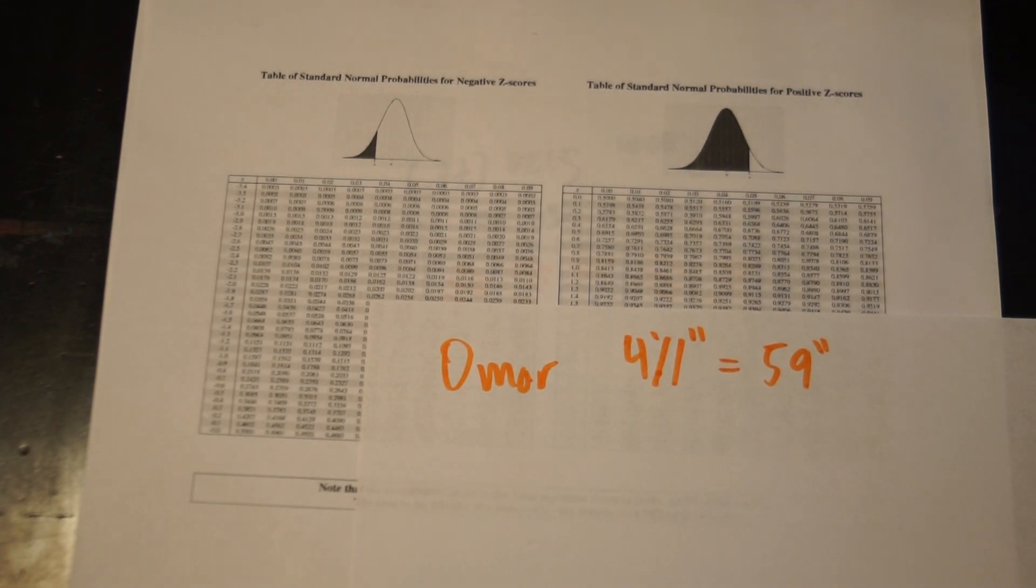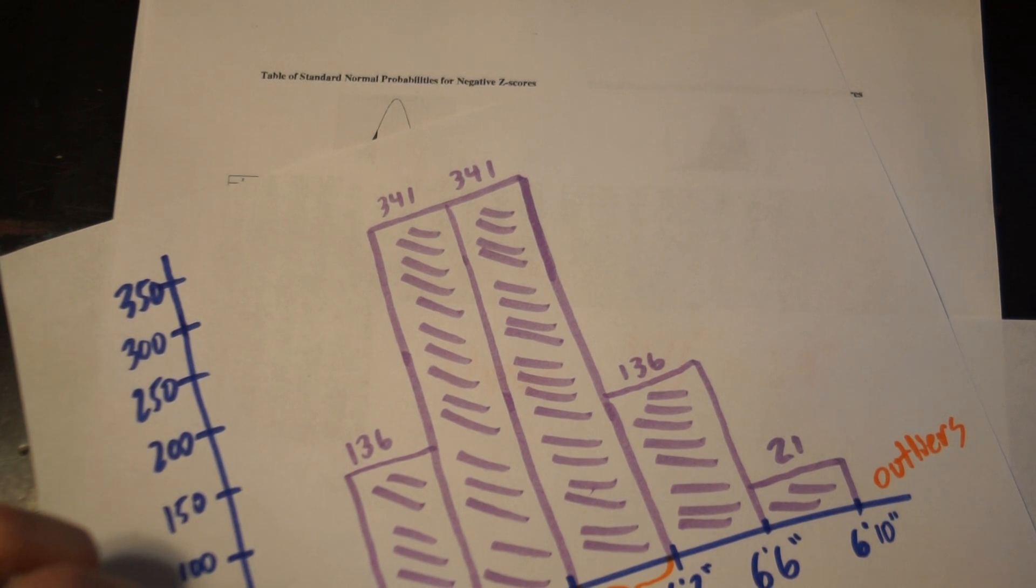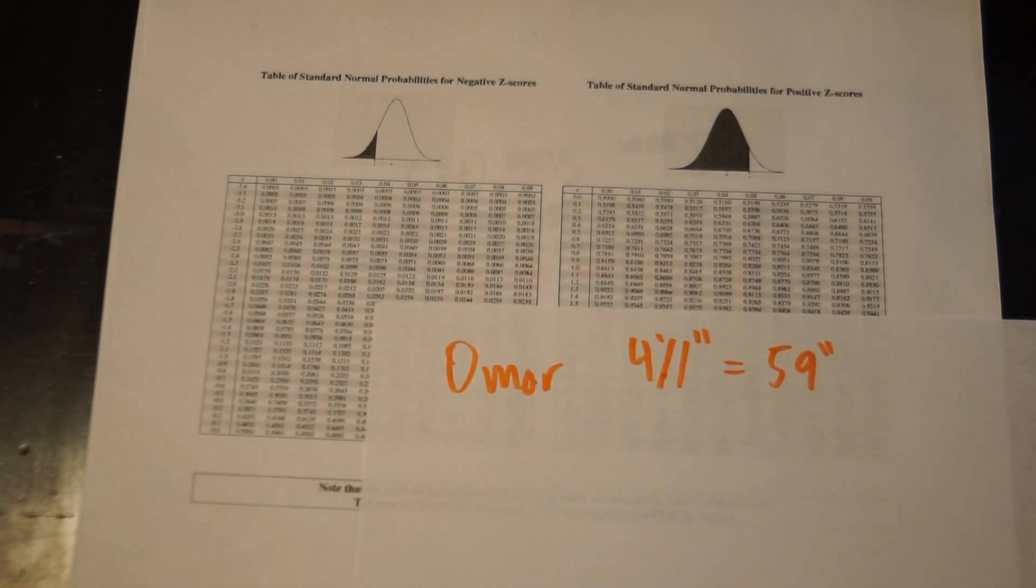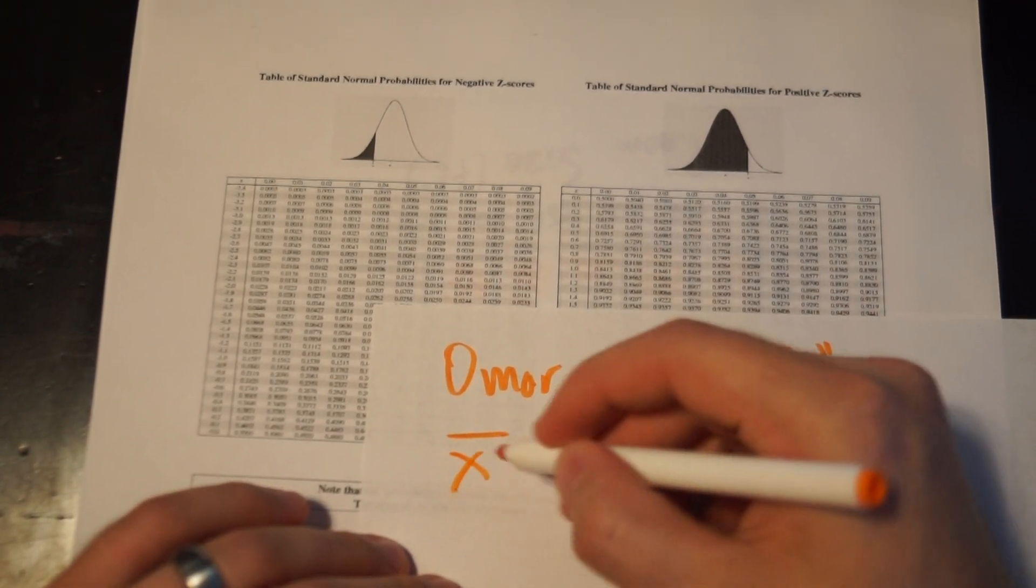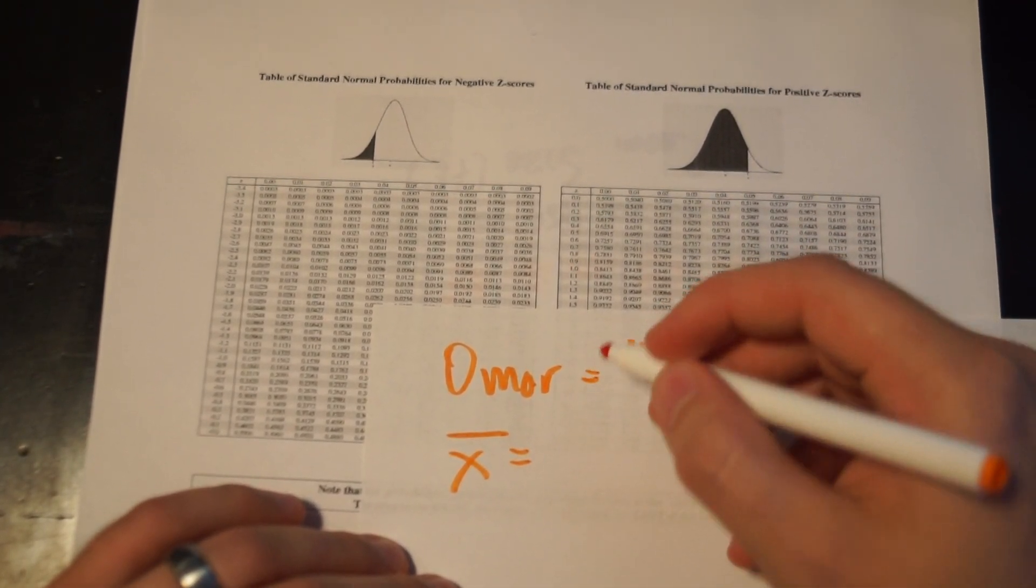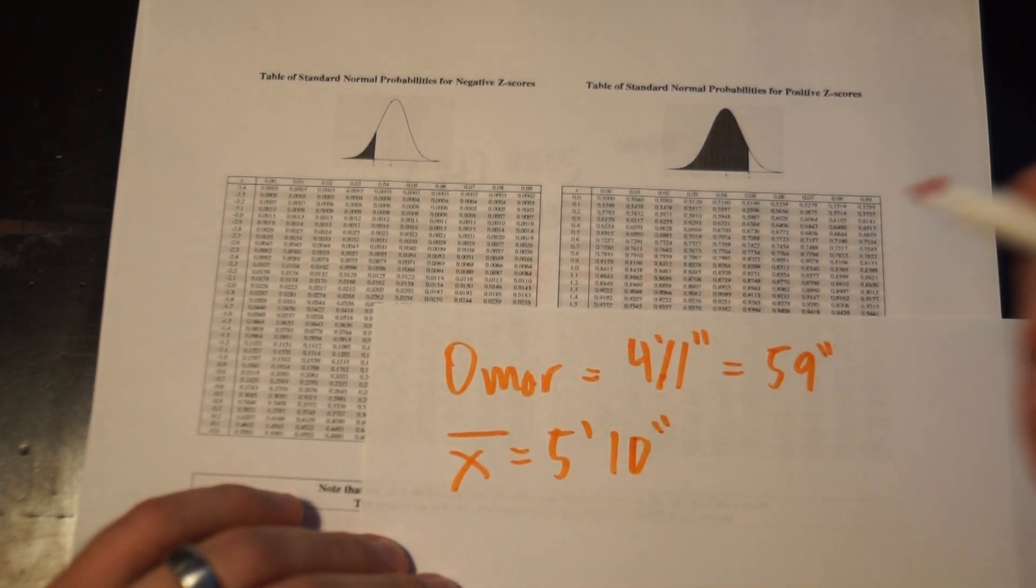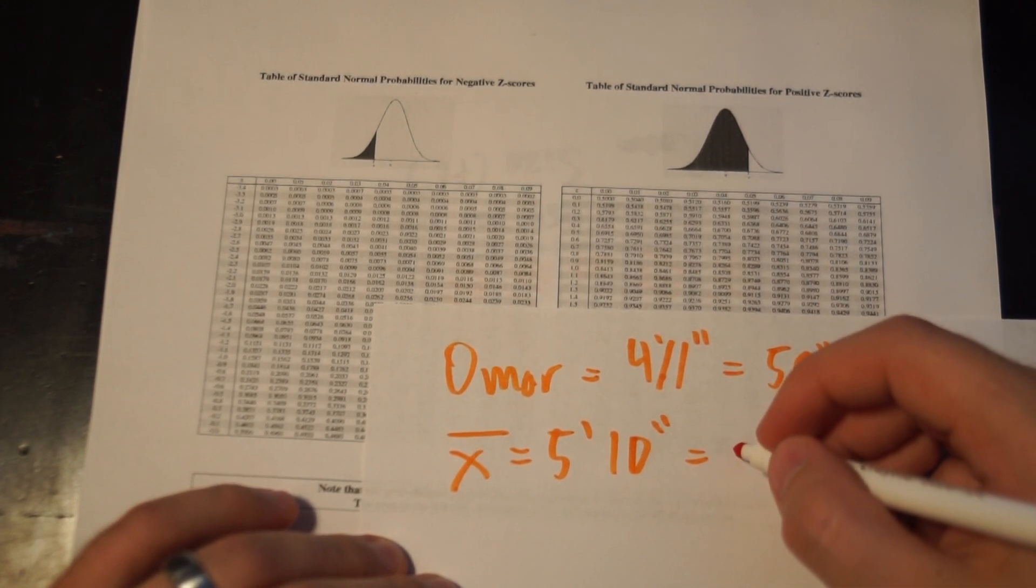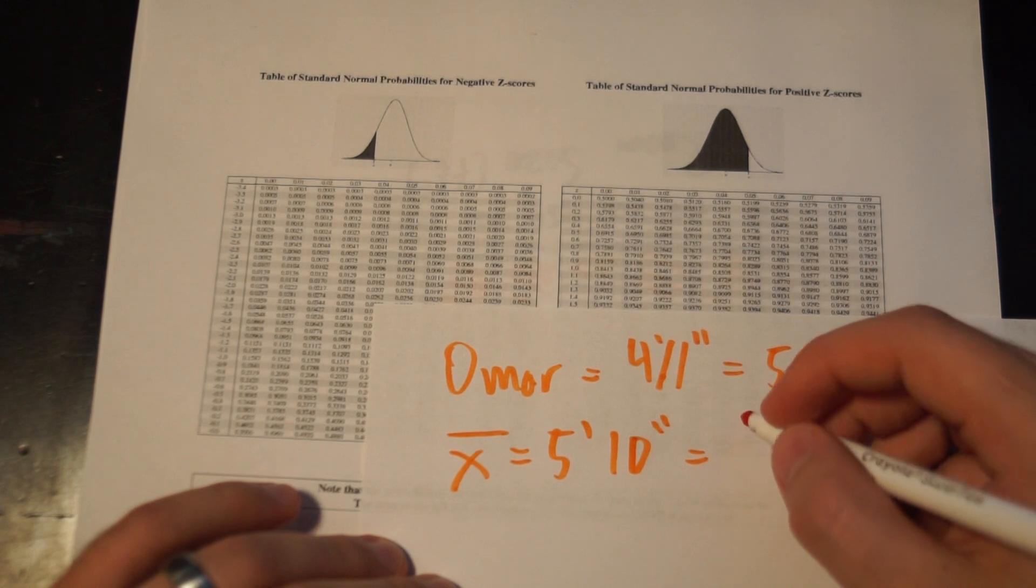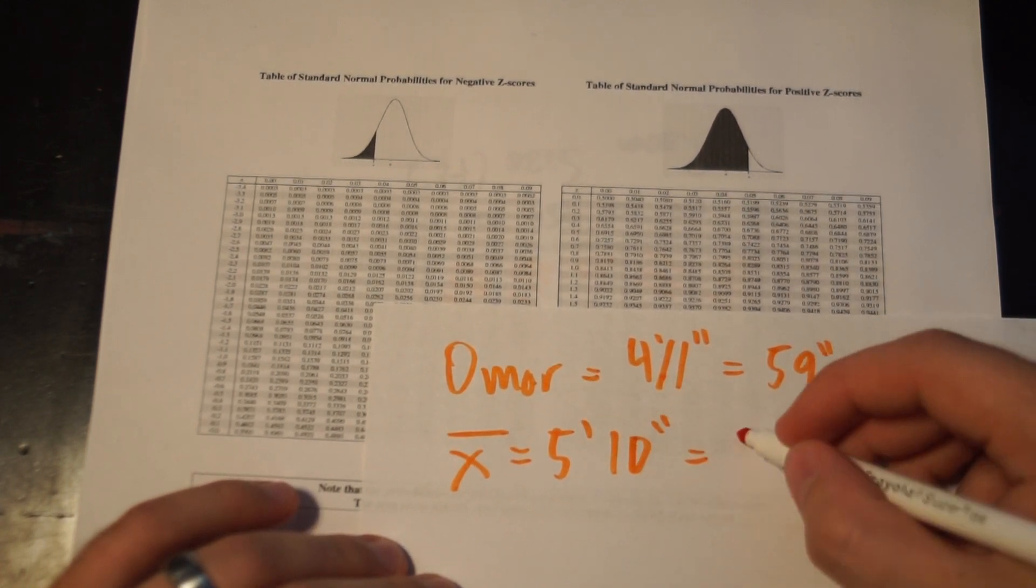Now, we just saw, based on our last graph, that average is 5'10". So x-bar is 5'10". So we're going to convert that. So 5 times 12 is 60, plus 10 is 70 inches.